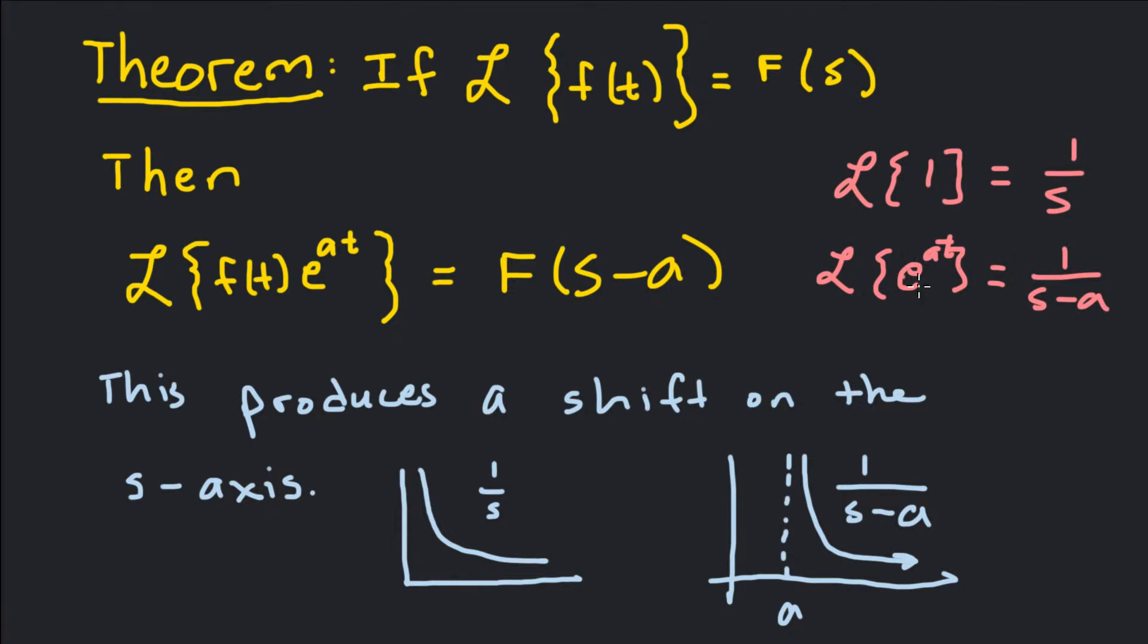So that's exactly what happens. Our Laplace of 1 gets shifted to the right to a. So our vertical asymptote which was at 0 is now at a, and it gets shifted to the right a units. So that's Laplace transform of 1 times e to the at.